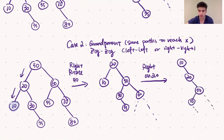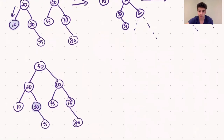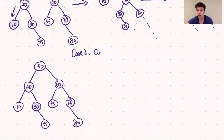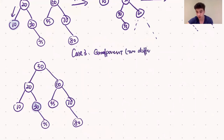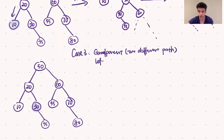This brings us to the third and final case. This is the case when the root is the grandparent of the node we want to splay, but it can only be reached by taking two different direction paths — either going left then right, or right then left. We call this the zig-zag case.